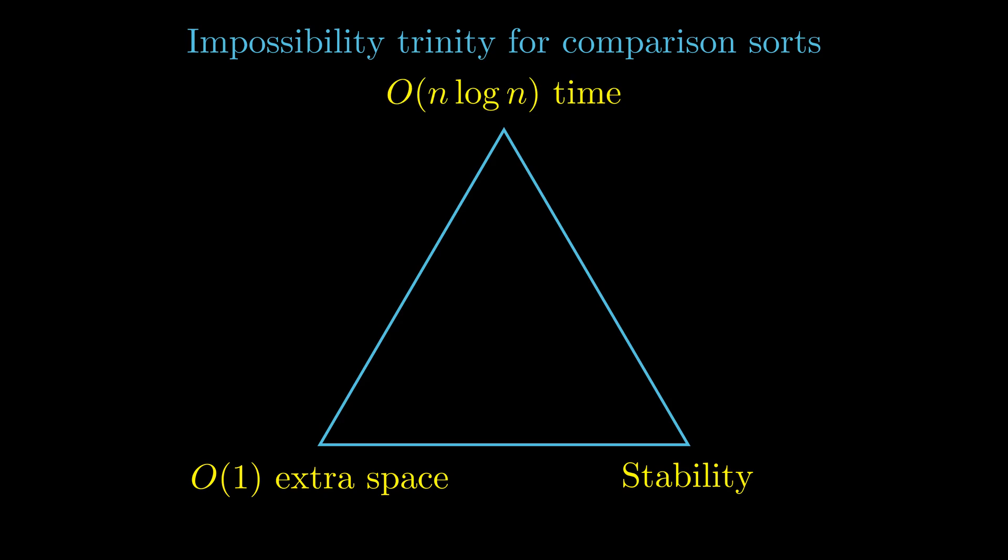We want it to consume only O(1) extra space, and we want it to be stable. The impossible trinity states that a given algorithm can get at max two of these properties.